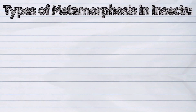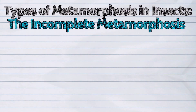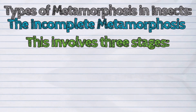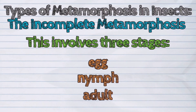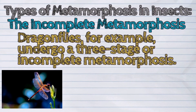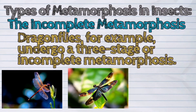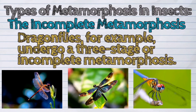The second type is the incomplete metamorphosis. This involves three stages: egg, nymph, and adult. Dragonflies, for example, undergo a three-stage or incomplete metamorphosis.